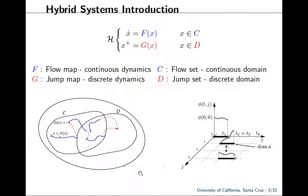Looking at this figure on the bottom left, you can see when the system is in the flow set C, it evolves continuously, denoted by this blue line. When it is in both the flow and jump set, it can either evolve continuously in blue, or it can jump and make a discrete change, indicated by this red dotted line. And when the system is in the jump set, it can only evolve by jumping discretely.